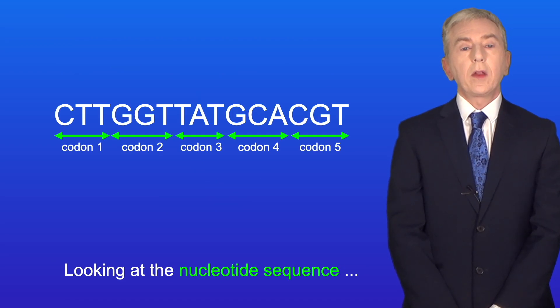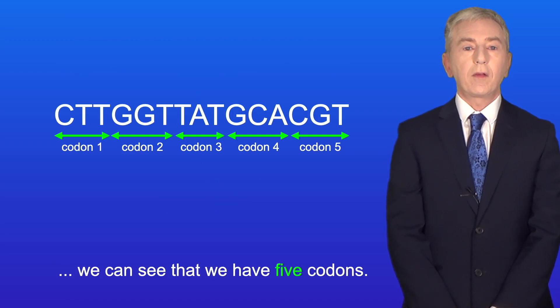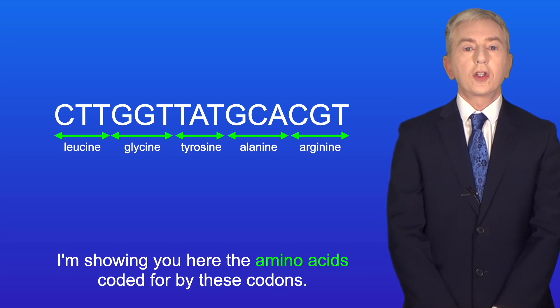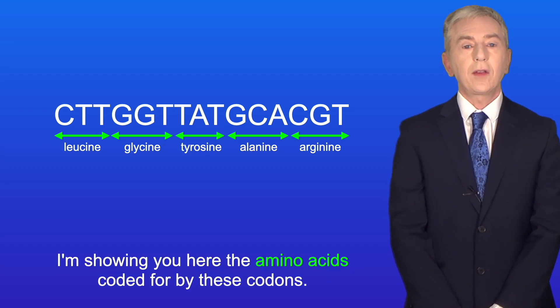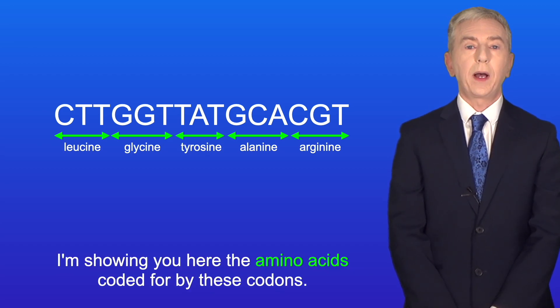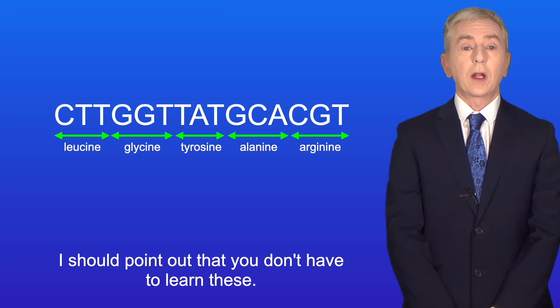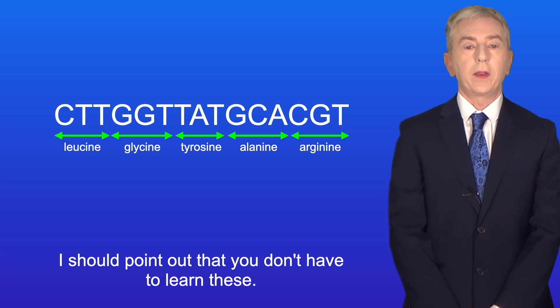Each triplet of DNA nucleotides in a gene encodes a specific amino acid, and these triplets are referred to as codons. Looking at the nucleotide sequence, we can see that we have five codons. I'm showing you here the amino acids coded for by these codons — and I should point out that you don't have to learn these.